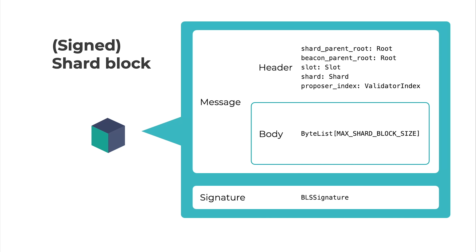This is the data structure of the shard block. It's much simpler than the ETH1 block or the beacon block. We have pointers that point to the shard parent root and the beacon parent root. The most data overhead is the block body, which consists of binary data and has no in-protocol transaction logic. That's why it is called the shard data layer. We expect that Layer 2 rollup applications will benefit from it even if there is no transaction format.